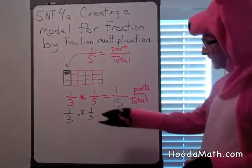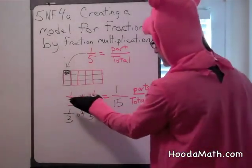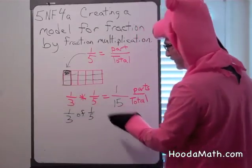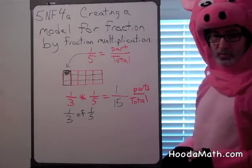Now, if you multiplied the numerators, 1 times 1, you get 1. 3 times 5, you get 15. That is a way of doing it as well.